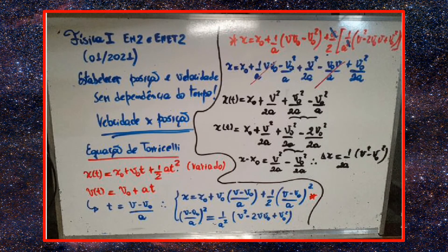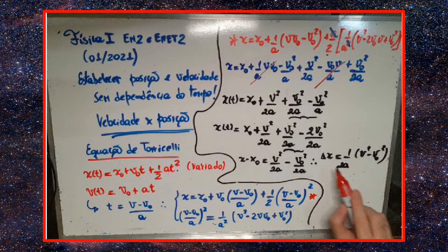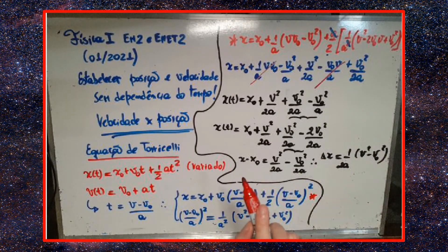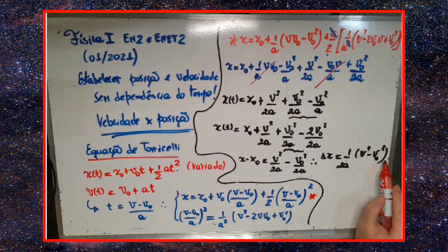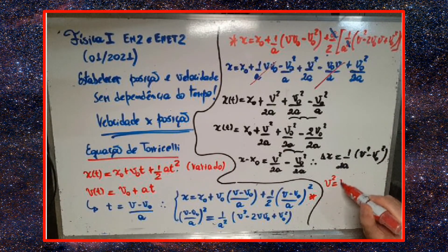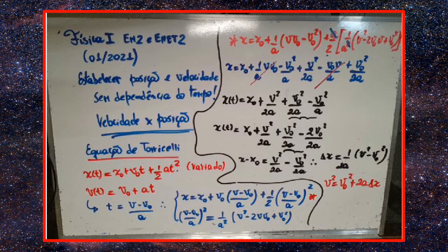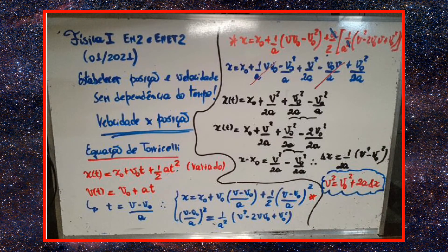Finalizando: tenho que isolar o v. Vou passar o 2a multiplicando, ficando v² − v₀² = 2a·Δx. Isolando v² o resultado final é: v² igual a v₀² mais 2 vezes a aceleração que multiplica o deslocamento escalar Δx. Esse é a famosa equação de Torricelli, onde a gente não tem mais a dependência temporal.